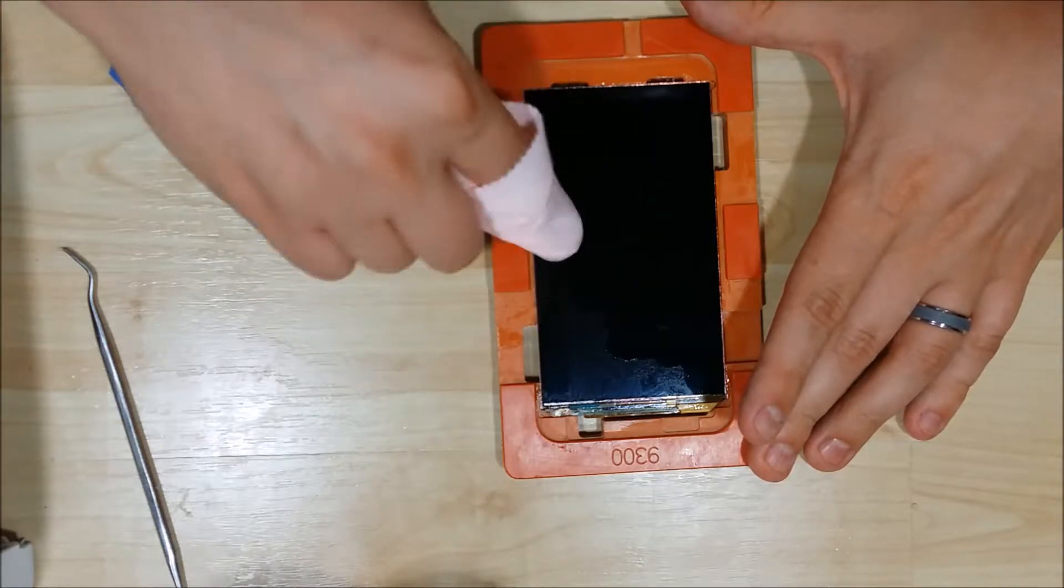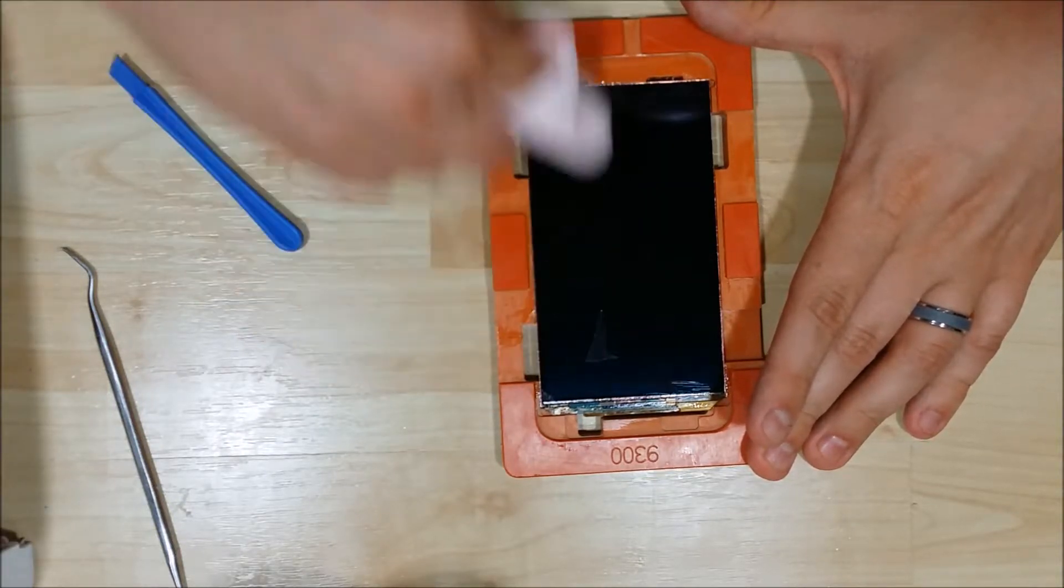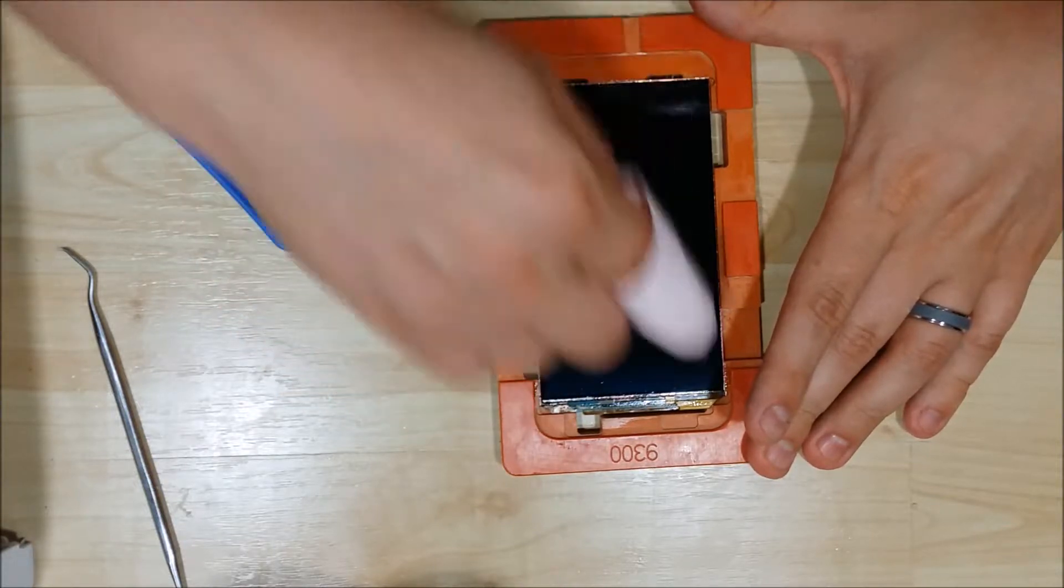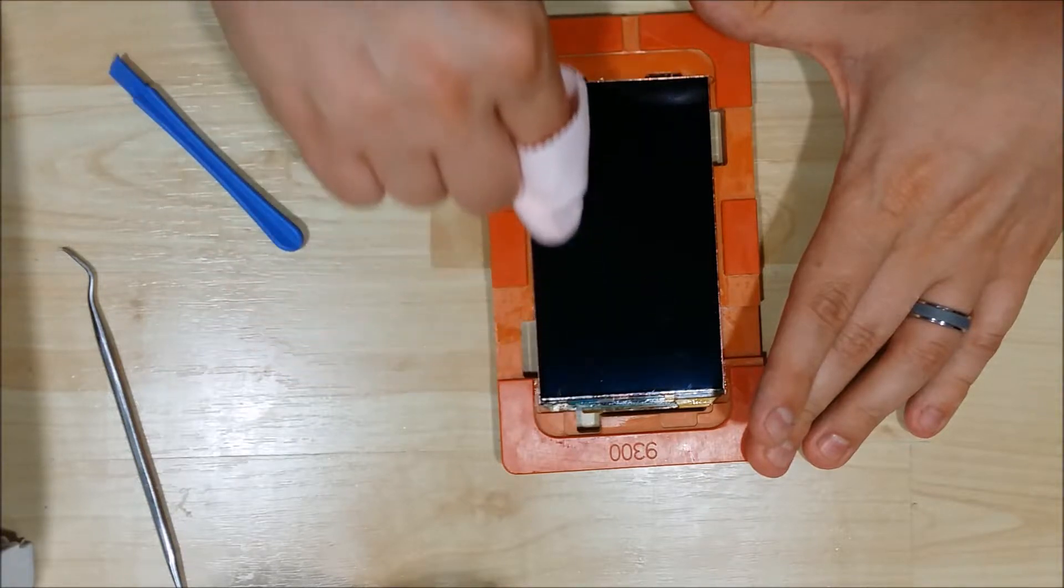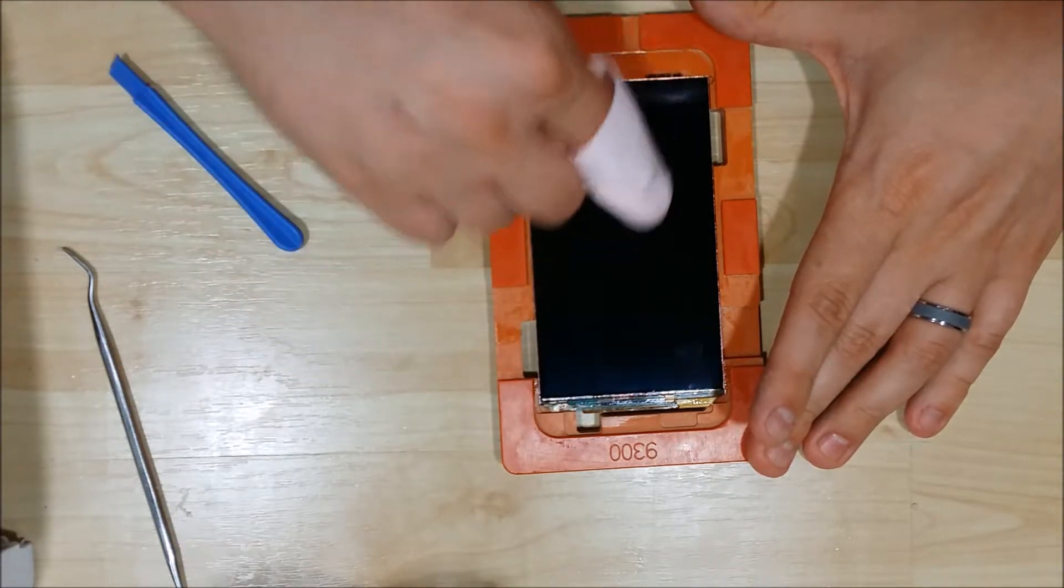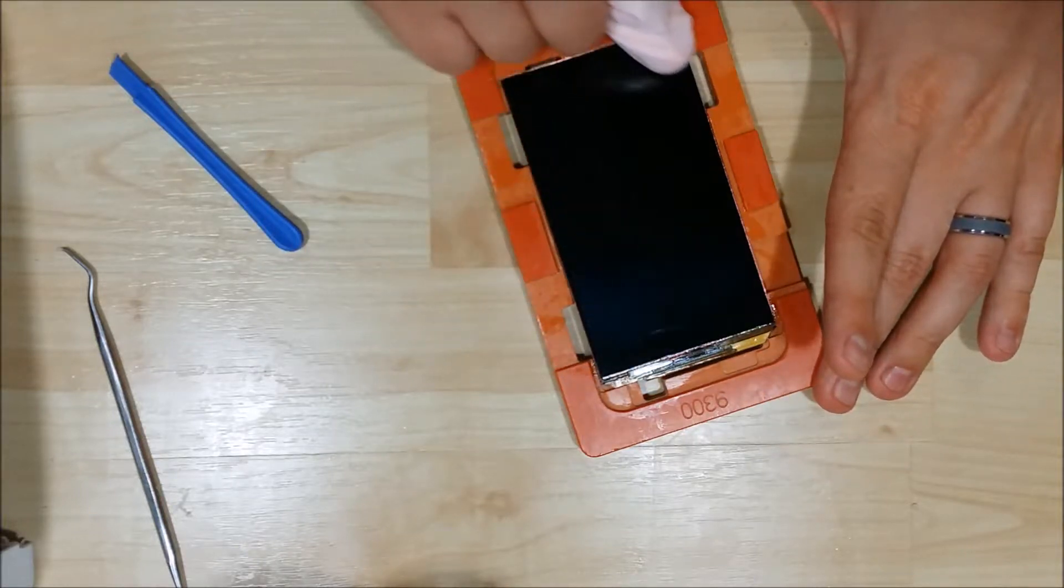It's not extremely important that you get all the streaks off the screen, as the glue will get rid of the streak look. The goal is to make sure there's no dust on it. This takes a little bit of care if you're not in a clean room with particles flying around.